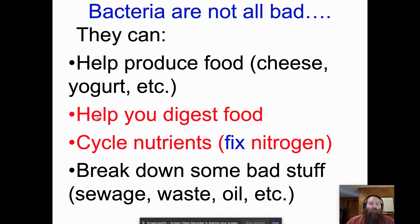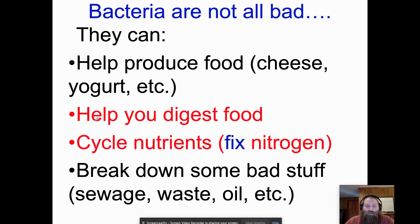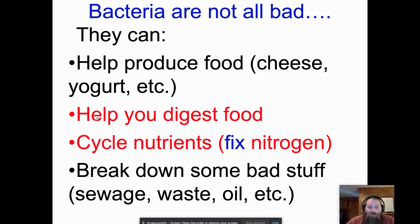Not all bacteria are harmful — we rely on bacteria for many things. They help produce foods like cheeses and yogurts. They help us digest our food. In the environment, bacteria cycle nutrients — for example, the nitrogen cycle requires bacteria living on plant roots to fix atmospheric nitrogen into a usable form. Humans also use bacteria to break down sewage, waste oil, and other things we don't want to deal with.